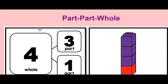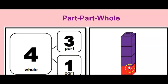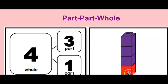Remember, in the part-part-whole strategy, you can have a whole amount and split it up into parts. The parts don't have to be equal parts, boys and girls. Just like we have four cubes here — three parts are purple and one part is red. But if you put them all back together again, you still have four parts, or the whole item.